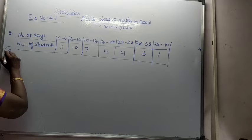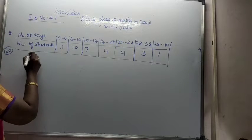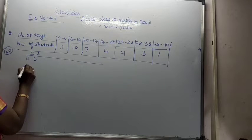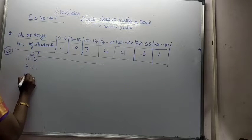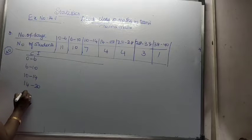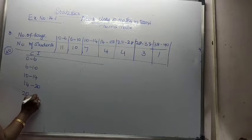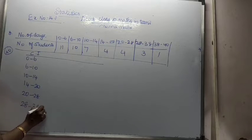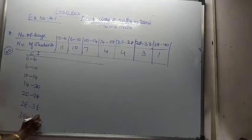Here, the class intervals are: 0 to 6, 6 to 10, 10 to 14, 14 to 20, 20 to 28, 28 to 38, and 38 to 40. This is continuous, but the intervals are not the same.